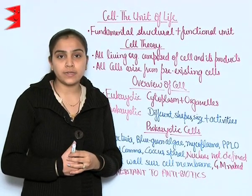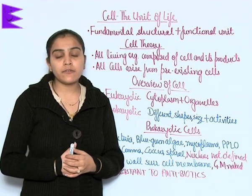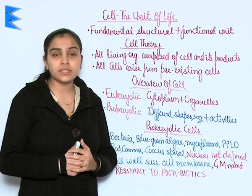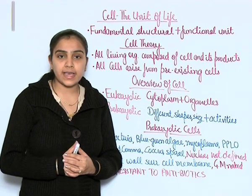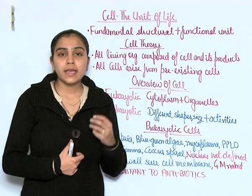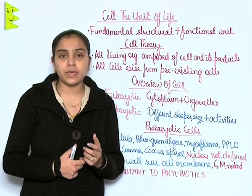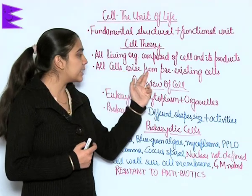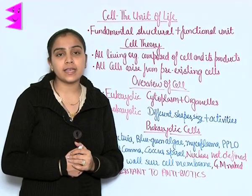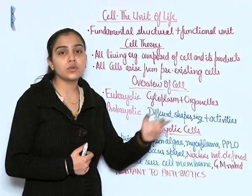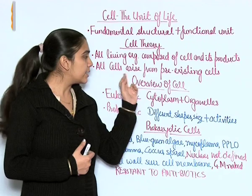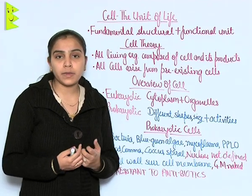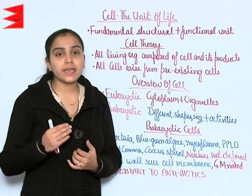Cell theory was given by Schleiden and Schwann. This theory states that all living organisms are composed of cells and their products — that is, any living organism is composed of cells and the products of cells. All cells arise from pre-existing cells.